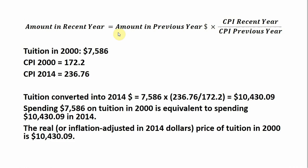All right, let's do another example. We're going to use the same formula, but this time we're going to look at tuition. Public tuition in 2000 in the United States — and this includes room and board and other fees — was $7,586. The CPI in 2000 was 172.2, and the CPI in 2014 is 236.76. The reason I'm using 2014 is that I don't have data on tuition in 2017, so I'll go up to 2014.